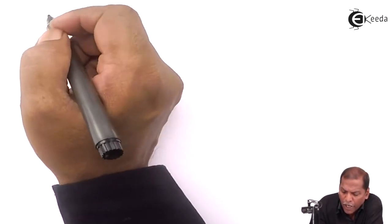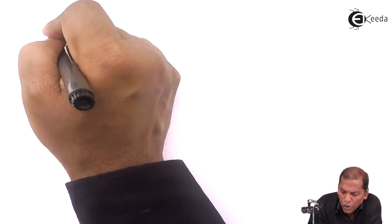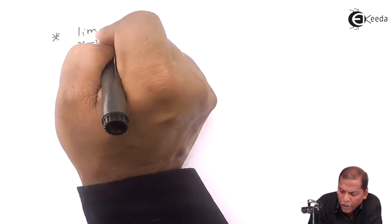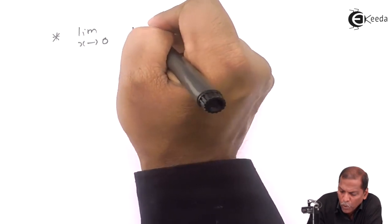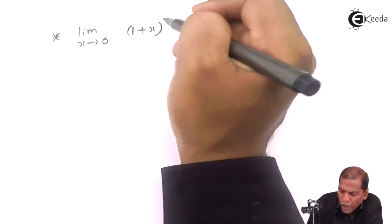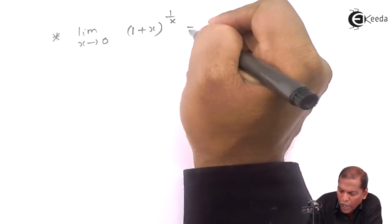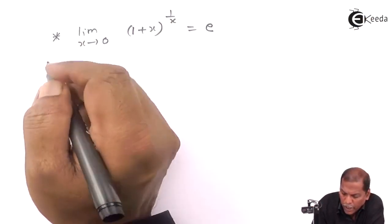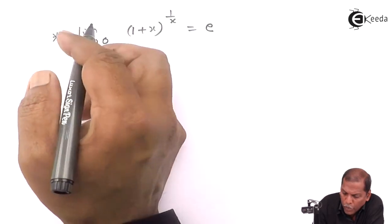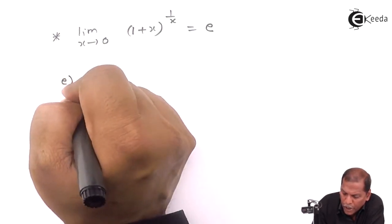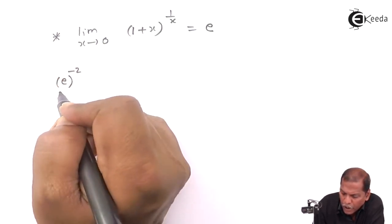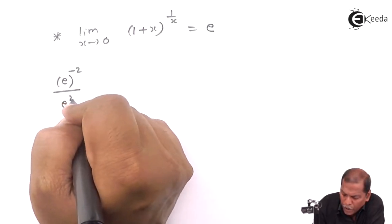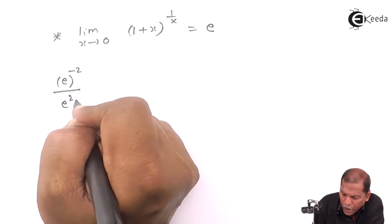Finally, we use the rule that limit x tends to 0, of 1 plus x raised 1 by x, is equal to e. Applying this, in the numerator we get e raised minus 2, and in the denominator we get e raised 2.